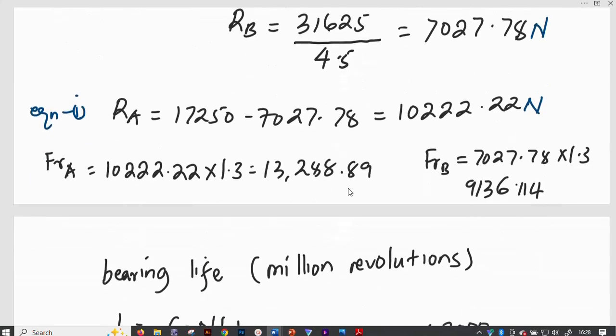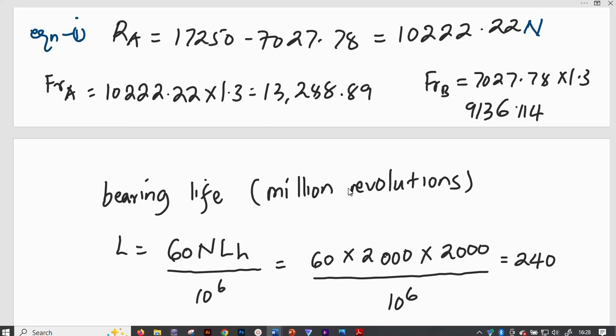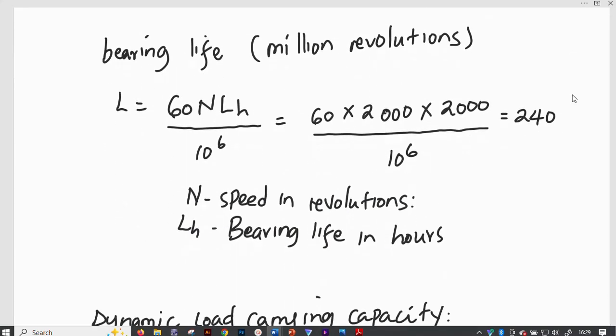Okay, therefore, if we apply the factor of safety for rotating machines, having been given that it is 1.3, for us to get the equivalent radial load at A, which we are calling FRA, is going to be 10,222.22 times 1.3, which gives us 13,288.89 Newtons. Then FRB will be the RB times the factor of safety, and this will give us 7,027.78 times 1.3, giving us 9,136.114 Newtons.